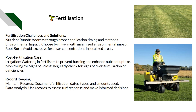Avoid root burn by preventing excessive fertilizer in concentrated localized areas. Post-fertilization care usually includes irrigation — especially with granulars — to prevent leaf burn and enhance nutrient uptake. Monitor regularly for signs of stress, as over-fertilization or deficiencies can appear quickly. Keep detailed records documenting fertilization types, dates, amounts used, and outcomes to make better-informed decisions for future maintenance practices.